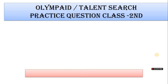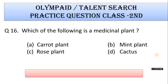Number 16: Which of the following is a medicinal plant? A. Carrot plant, B. Mint plant, C. Rose plant, D. Cactus. Correct answer is Option B. Mint plant.